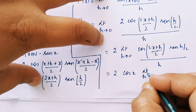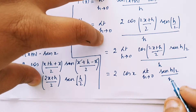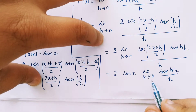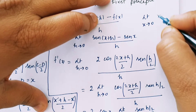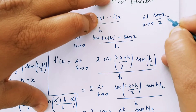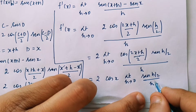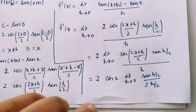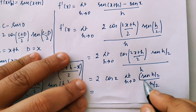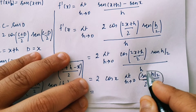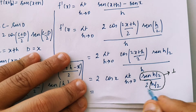The remaining part is: limit h tends to 0 of sin(h/2) divided by h. Now we learned in limits that limit x tends to 0 of sin x divided by x equals 1. So I will divide by 2 and multiply by 2 to get sin(h/2) divided by (h/2), which tends to 1 as h tends to 0. So only 1/2 remains from this part.